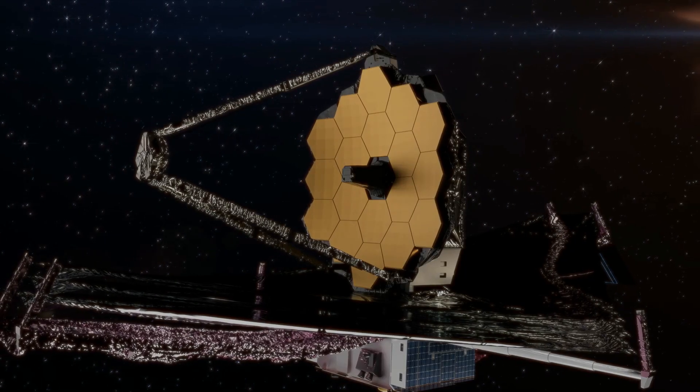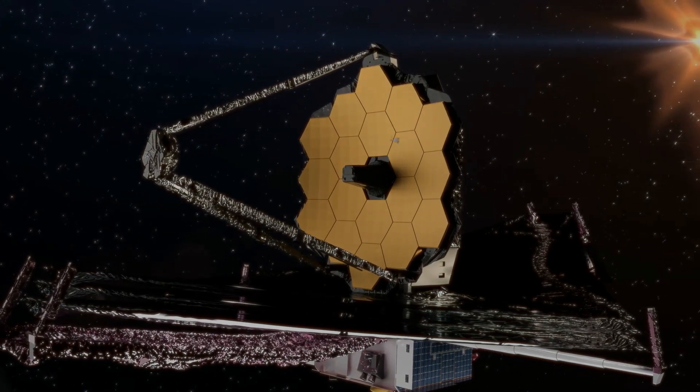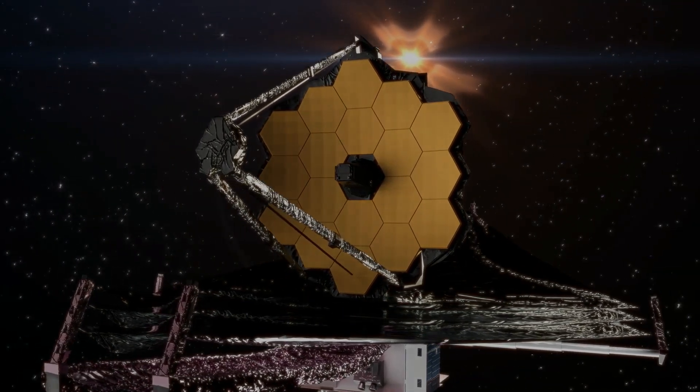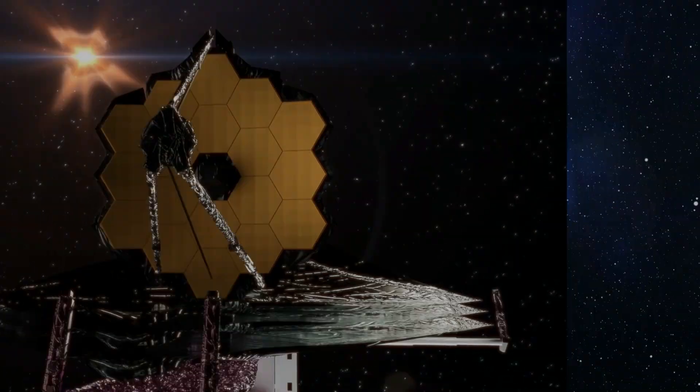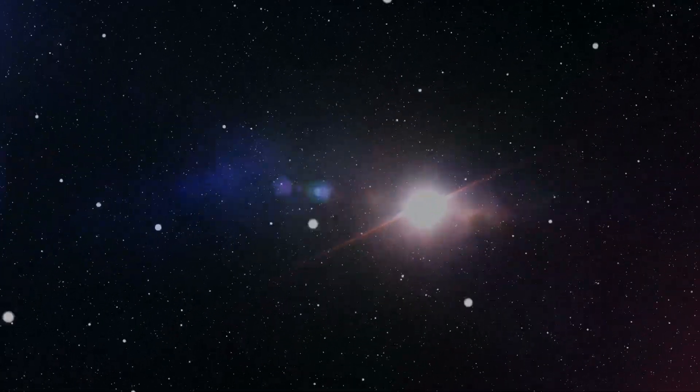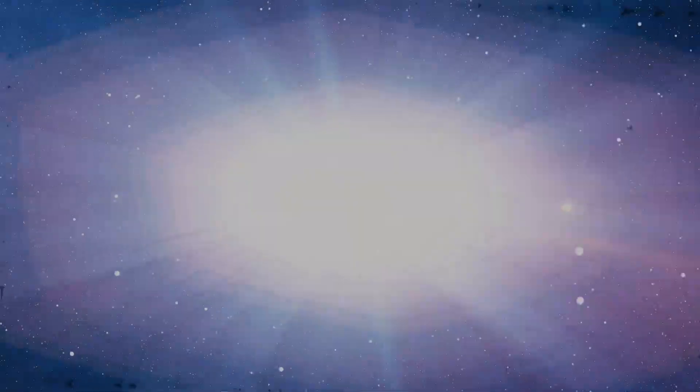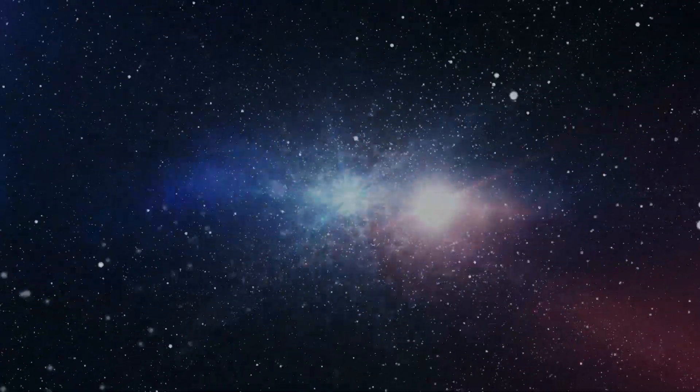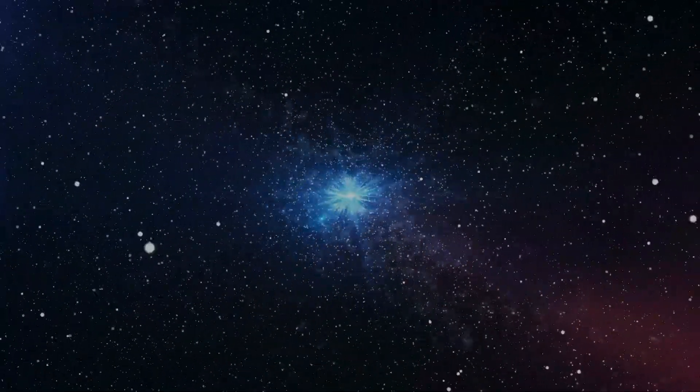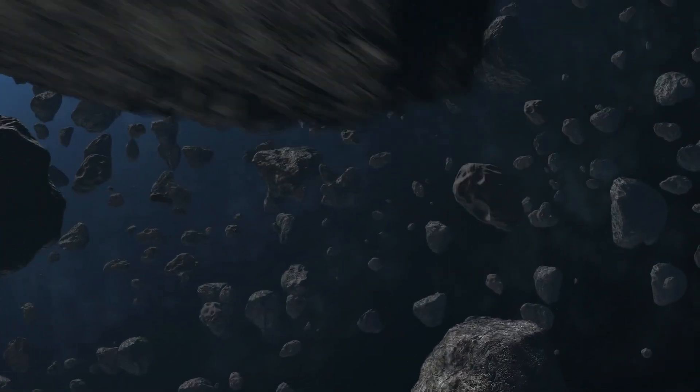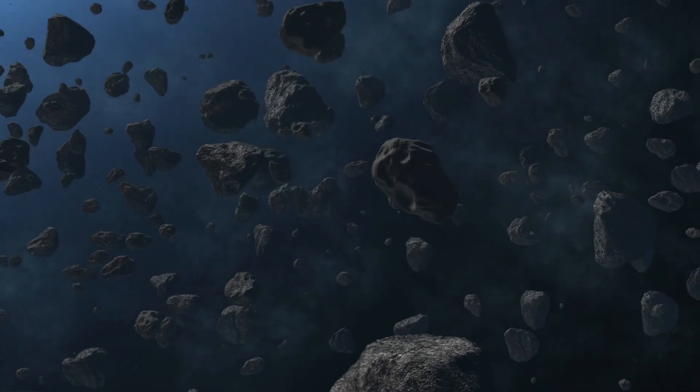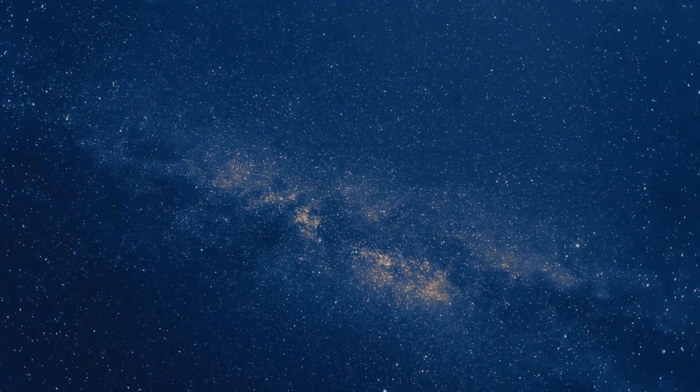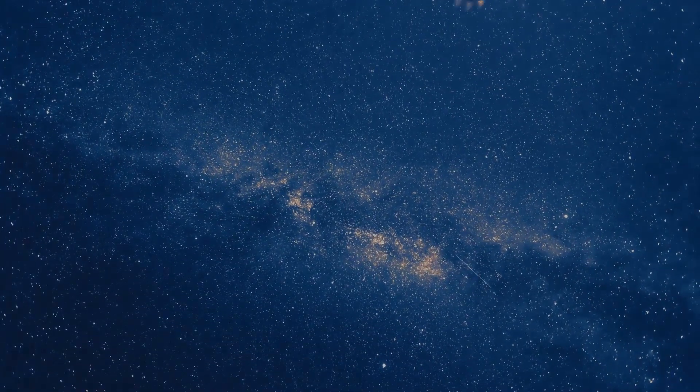The James Webb Space Telescope, theoretically capable of peering back 13.6 billion years, tantalizes us with the possibility of pushing the boundaries of our observational reach. If we accept that the Big Bang occurred approximately 13.8 billion years ago, it implies a finite limit to what we can observe. This limitation arises from the fact that in the early stages of the universe, a few hundred years after the cataclysmic event, the cosmos would have plunged into complete darkness. The formation of the first stars is believed to have taken place only after 380,000 years.